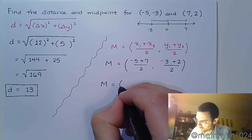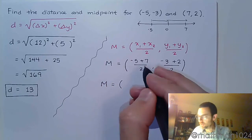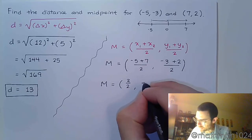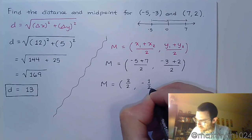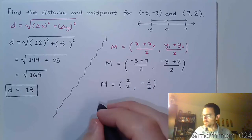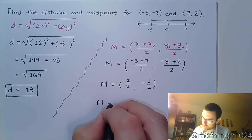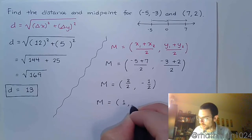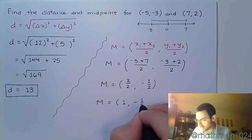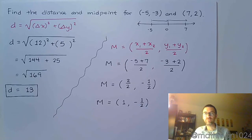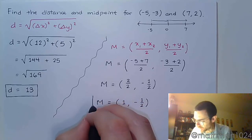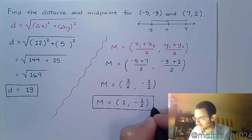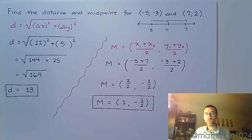Negative 5 plus 7 is 2 over 2, which gives us 1. And negative 3 plus 2 is negative 1 over 2. Make sure that you do simplify. So the midpoint is the ordered pair (1, negative one-half). There's really not a whole lot of work here — this is probably one of the easiest things you can do.